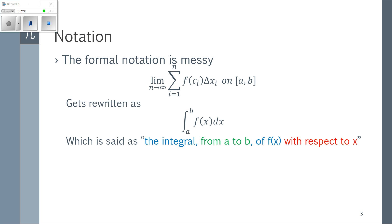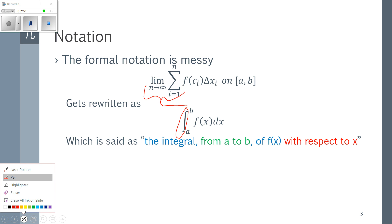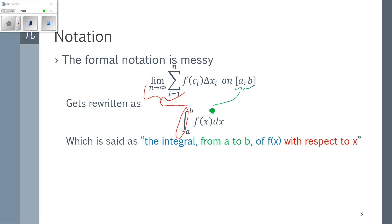We rewrite this using a tall skinny S that replaces all of that. The limit as n goes to infinity of the sum from one to n gets replaced with a tall skinny S. The a to b part says what interval we're on: where we start is at the bottom and it's called the lower bound, where we end is at the top and it's called the upper bound. So a is the lower bound and b is the upper bound.